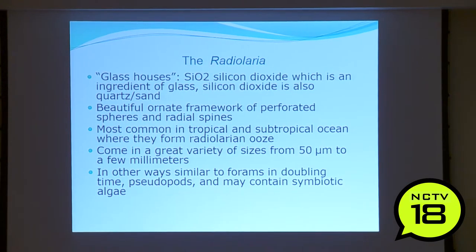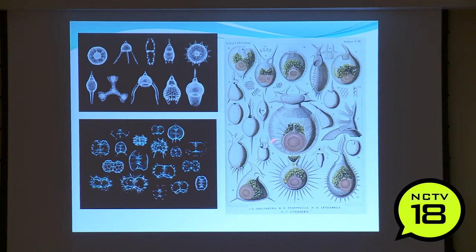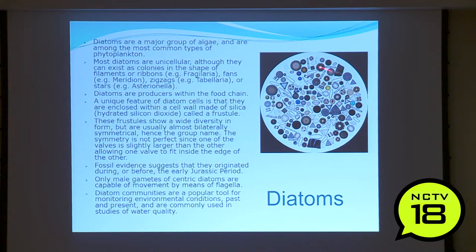Radiolaria are made of silicon dioxide — an ingredient of glass and quartz. They're beautiful, with long radiating spines, common in tropical and subtropical oceans, ranging from 50 microns to a few millimeters. They're similar to forams in doubling time and pseudopods and may contain symbionts. The drawings shown were made aboard the HMS Challenger — someone looked at each one under a microscope and drew these amazing illustrations. Under a scanning electron microscope and in true color, these are gorgeous creatures.